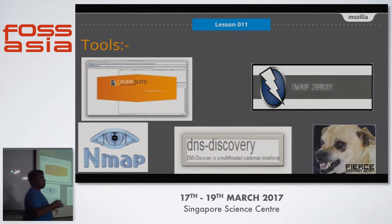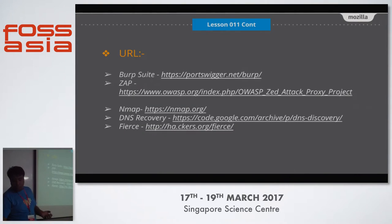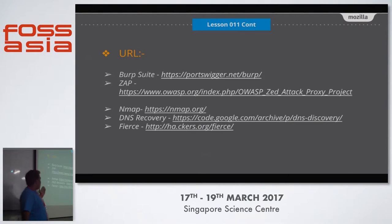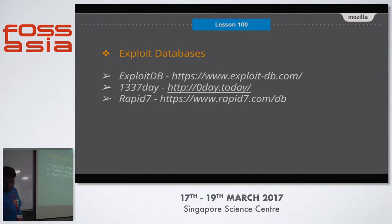You can intercept browser requests and do something on the inner side. Burp Suite can find specific issues, ZAP proxy can find issues, nmap can find links, DNS discovery, and others — each serves a specific purpose. I will share my slides so you can review the links later.